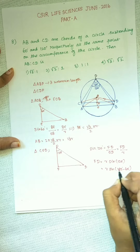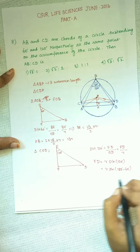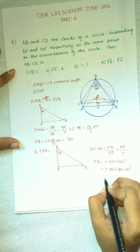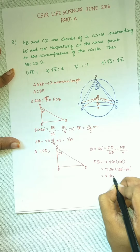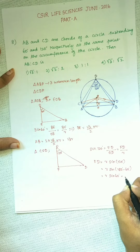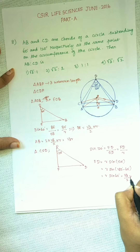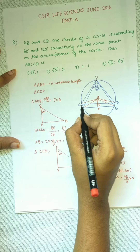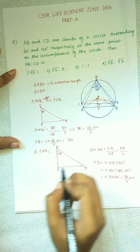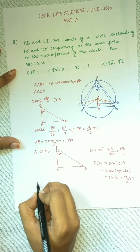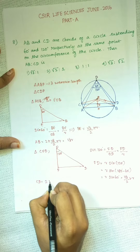So BE is equal to sin 60° times R, which is (√3/2) × R. Since AB is twice BE, AB equals 2 × (√3/2) × R, which equals √3 R.